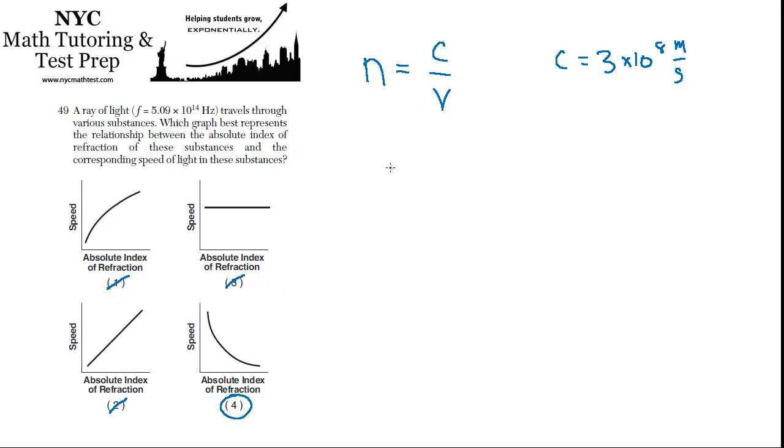Again, this is kind of a power law relationship. In general, in algebra, if you have Y equals 1 over X, it's going to have this shape. And that's exactly what's going on here. You have N equal to a constant over V. So the relationship between N and V is that as one goes down, the other goes up, and vice versa.